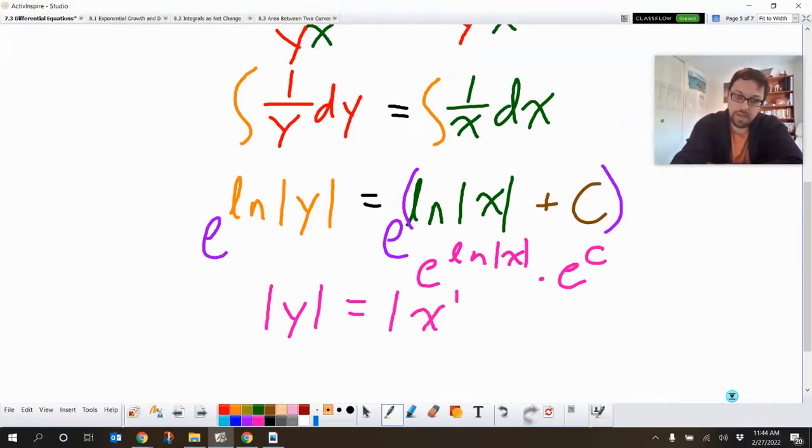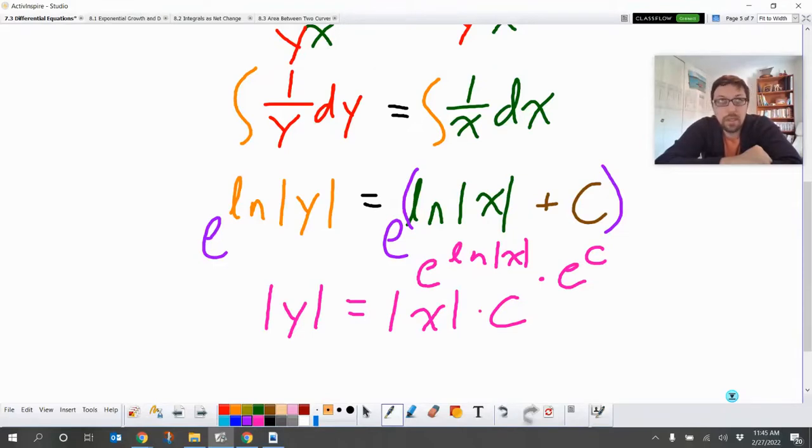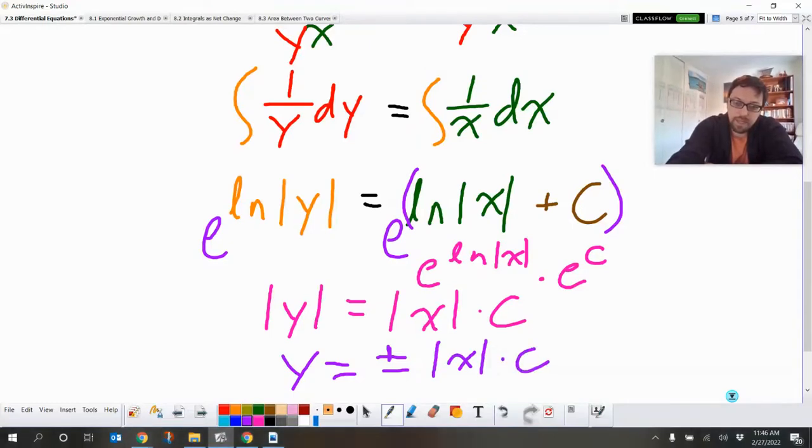So that's the absolute value of x multiplied by e to the c. e to the c is just going to be some constant. Now I want to get rid of that absolute value. What absolute value does is it makes negative things positive, and it keeps positive things positive. So y is just going to be plus or minus, because it could have been positive, could have been negative, of absolute value x multiplied by some constant c. And that's done. Solve for y. Finished.